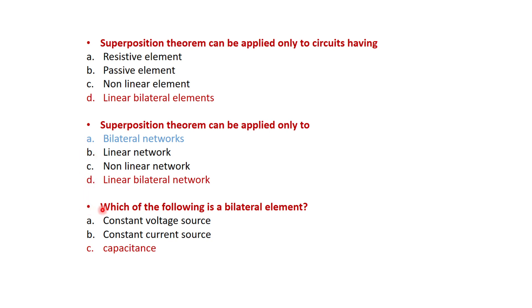Next MCQ: which of the following is a bilateral element? Options include constant voltage source, constant current source, and capacitance. The correct answer is capacitance — it is a bilateral element.